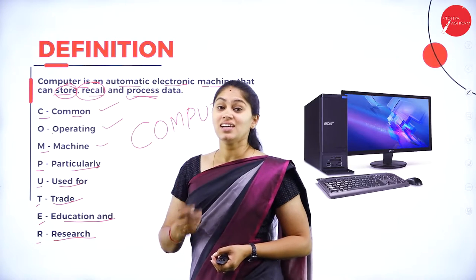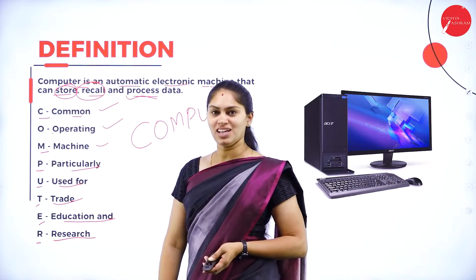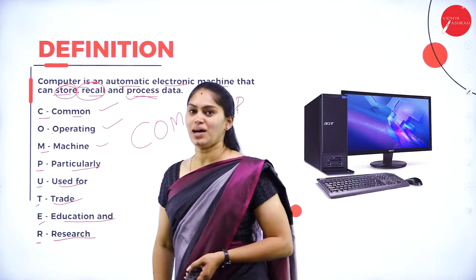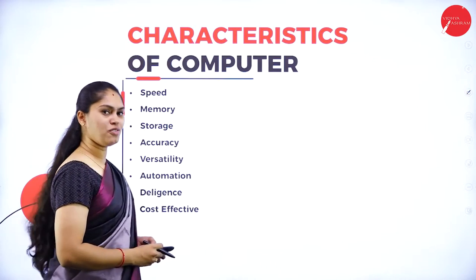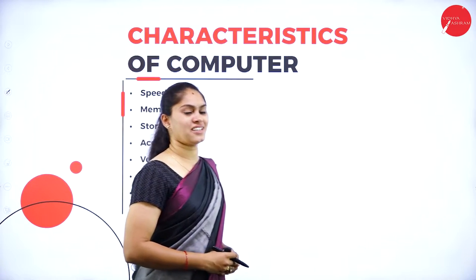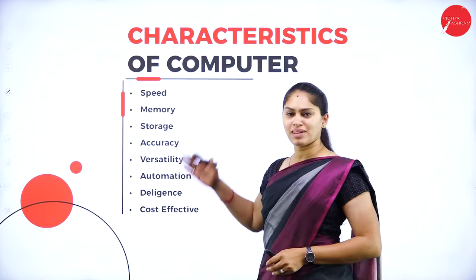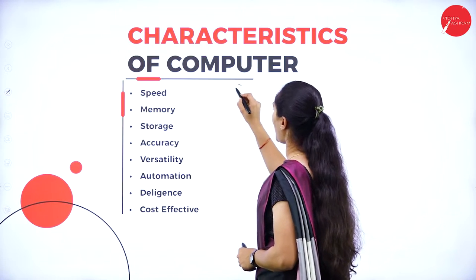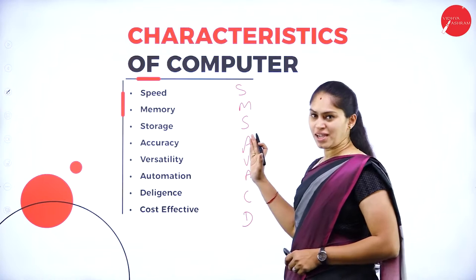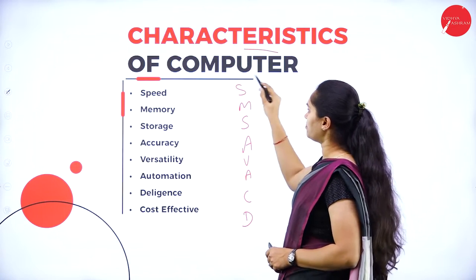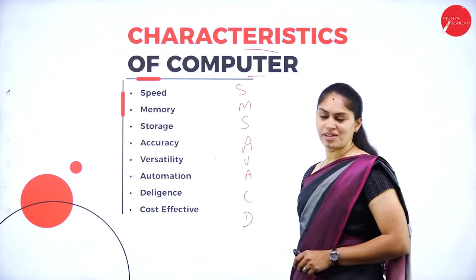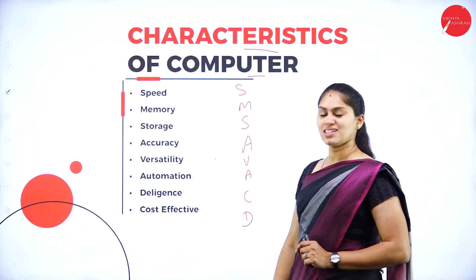I hope you all understood what we mean by computer and its basic abbreviation. Now let's see the characteristics of a computer. I have listed eight characteristics. Remember them as SMS AVA CD — Speed, Memory, Storage, Accuracy, Versatility, Automation, Diligence, and Cost Effectiveness. We will see each characteristic one by one.